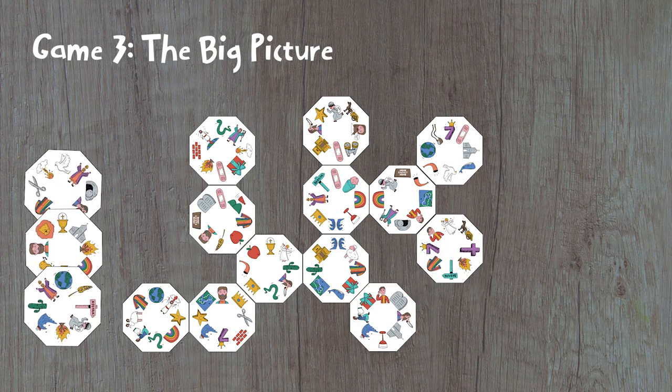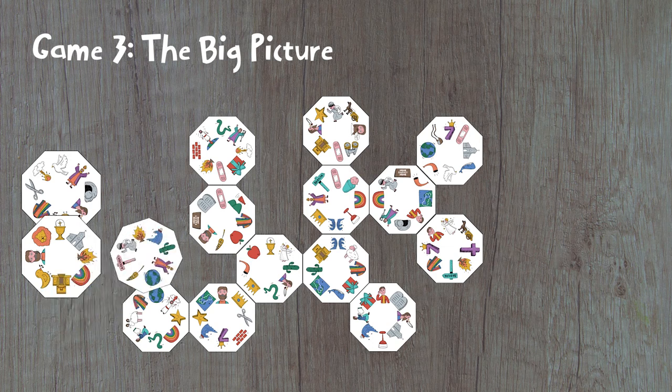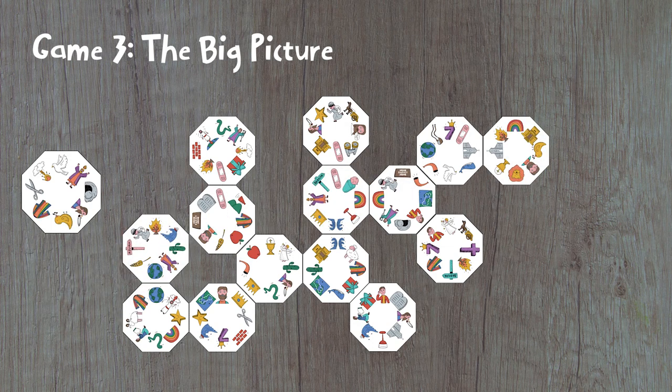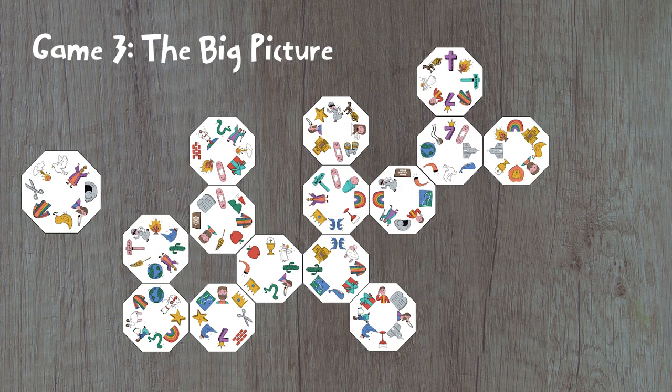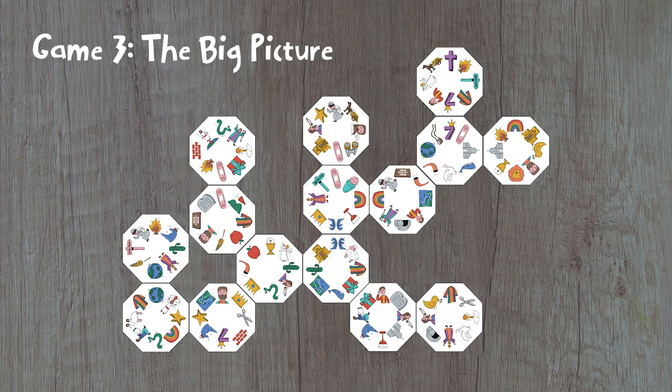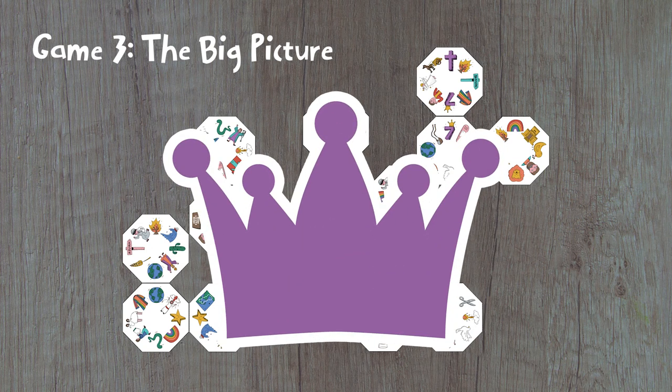When you run out of tiles in the face down stacks, try to link all the tiles in the discard pile to the face up tiles. You may move tiles around in order to link all 57 tiles together. The game ends when all 57 tiles have been linked, and everyone wins!